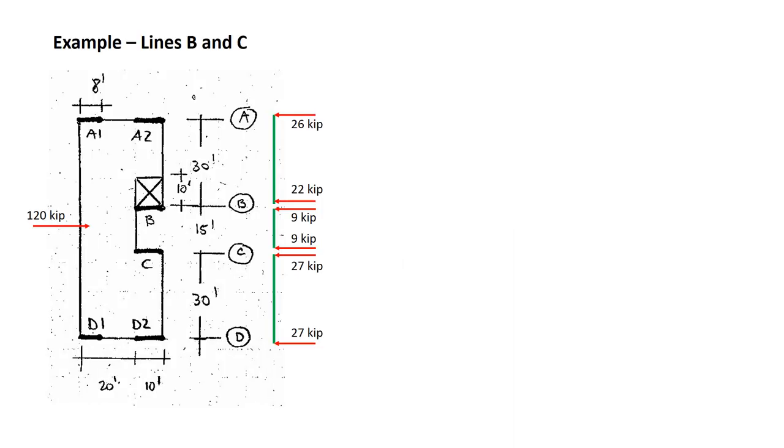Shown here is our example building. We have a force of 120 kips applied to the diaphragm. This has been determined in another video. In addition, we have the forces delivered to the lines of action shown to the right of the sketch. For the section between lines C and D, we have forces of 27 kips at either end. For the section between lines B and C, we have forces of 9 kips at either end. And for the section between grid lines A and B, we have uneven forces of 26 and 22 kips on either side. The question now is what are the collector forces that result from this?